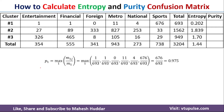For Cluster 1, P1 equals max of (M_1J / M_1): that is max of (1/693) for Entertainment, (1/693) for Financial, (0/693) for Foreign, (11/693) for Metro, (4/693) for National, and (676/693) for Sports. Once you solve this, you get 0.975 as the purity for Cluster 1.